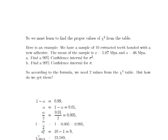So the trick to this is finding the correct value of chi-square from the table. Everything else is pretty straightforward, but this is the sneaky part. Let's look at our example. We have a sample of 10 extracted teeth bonded with a new adhesive. The mean of the sample is x-bar equal to 5.07 MPa, and s equals 46 MPa. So we want to find a 99% confidence interval for sigma-squared, and then a 99% confidence interval for sigma.